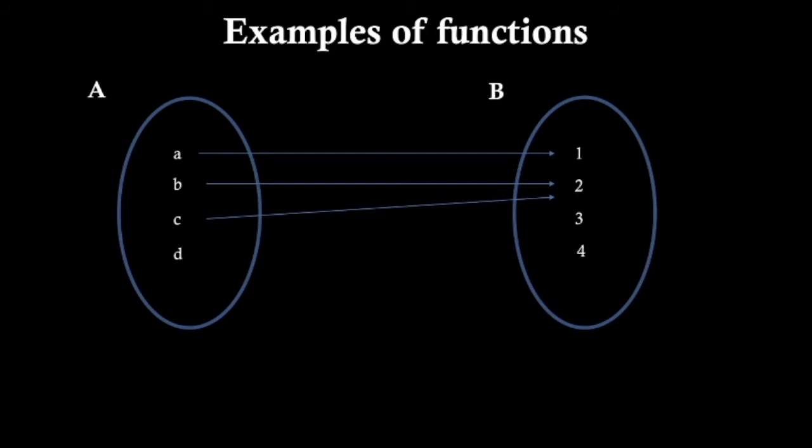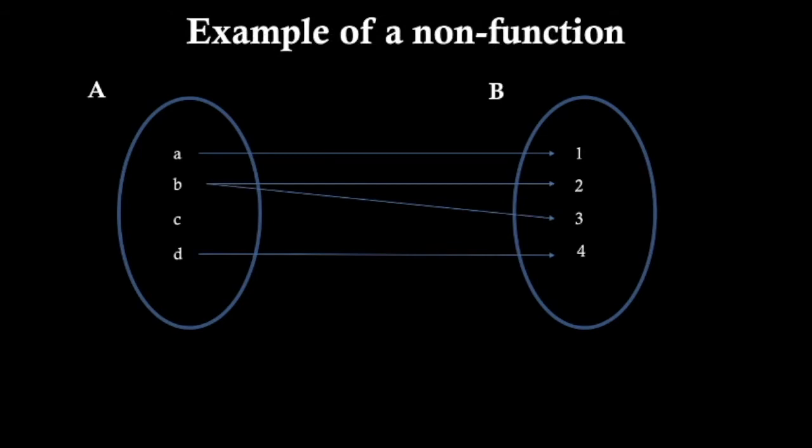It doesn't matter that two arrows converge in a single member of two. This is also an example of a function, in this case a partial function, because it's not defined for all values of A. But it respects the definition that to each member of A, there corresponds at most one member of two. This is a non-function. Why? Because there is a member of A to which there corresponds more than one member of B.